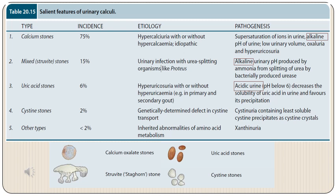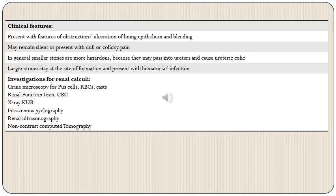Regarding gross appearance: calcium oxalate stones have a smooth whitish appearance; uric acid stones have a gray-yellowish-whitish appearance with concentric laminations on cut surface; cystine stones are shiny, smooth, multiple whitish stones; and struvite stones have multiple projections on their surface giving the staghorn name, taking on the shape of calyces and pelvis. An important special point is that uric acid stones are radiolucent compared to calcium oxalate stones which are radioopaque. Clinical features: stones can present with features of obstruction or ulceration of lining epithelium and bleeding; many remain silent or present with dull pain in the kidney or colicky pain if they pass into the ureters.